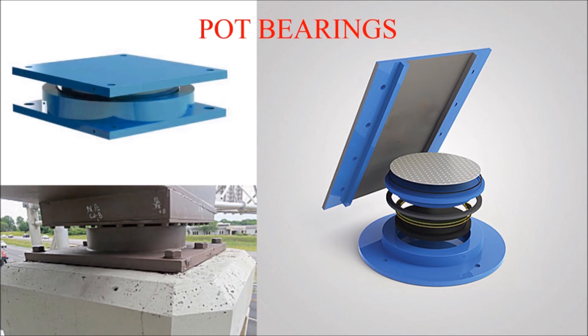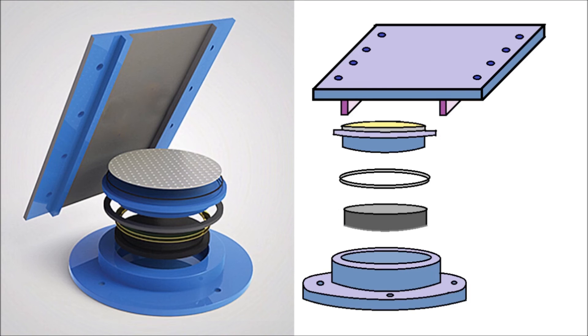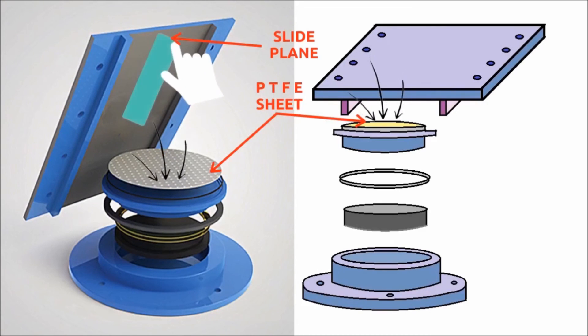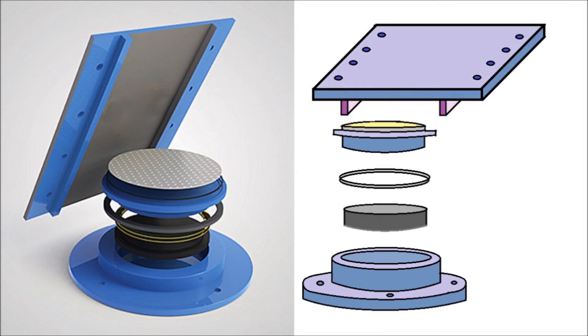Pot bearings are the combination of sliding bearing and elastomeric bearing. They allow three-dimensional movement in all directions. This is the top plate attached with superstructure by bolting. This is the guide provided for guidance during sliding of the plate, and this is the sliding plane which slides over the polytetrafluoroethylene sheet.